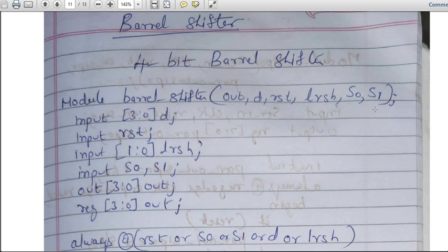A barrel shifter shifts left or right, and you can specify how many bits you want to shift - whether 1 bit, 2 bits, or 3 bits. You can shift however many bits you want. That is what's special about a barrel shifter.